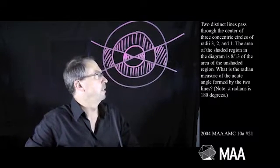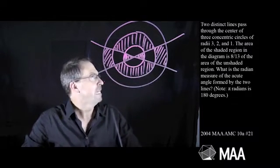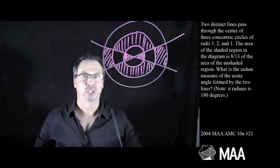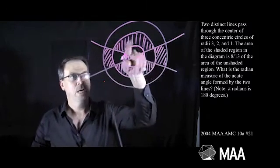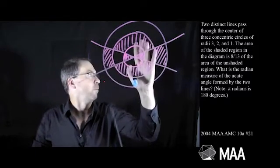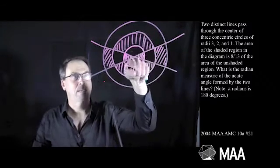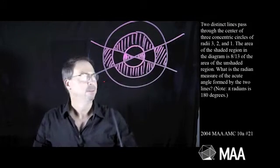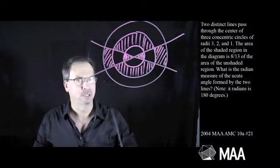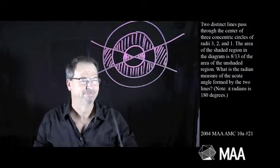The area of the shaded region in the diagram is 8/13 of the area of the unshaded region. So all the shaded stuff adds up to some area which is 8/13 of the unshaded area. 8 thirteenths. 8's Fibonacci, 13's Fibonacci. Hmm, probably not. Okay.